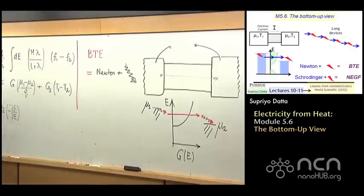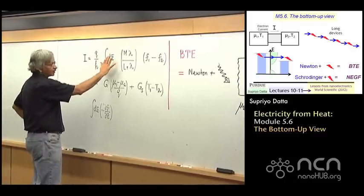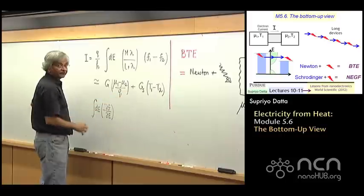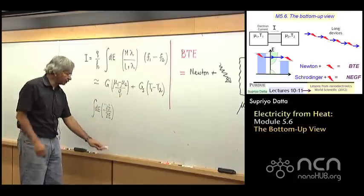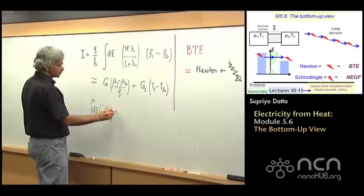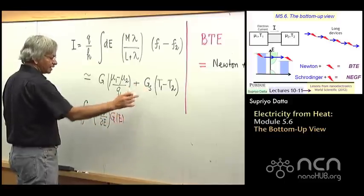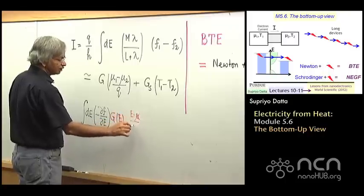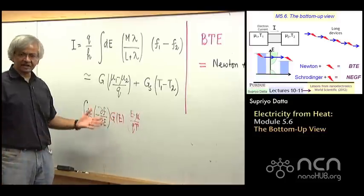Many of the results that we have obtained. For example, just this week, one of the things we did was we took this expression for current and wrote it in terms of this conductance and this G sub S and the Seebeck coefficient. And we obtained expressions for these things. For the conductance, we had an expression that looked like this, and when we wanted the G sub S, there was this additional factor in there with E minus mu over QT.